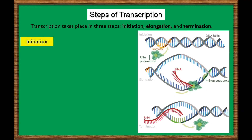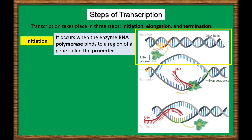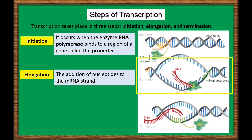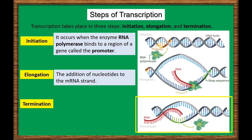Initiation is the beginning of transcription. It occurs when the enzyme RNA polymerase binds to a region of a gene called the promoter. This signals the DNA to unwind so the enzyme can read the bases in one of the DNA strands. The enzyme is ready to make a strand of mRNA with a complementary sequence of bases. After initiation, the next step is elongation — the addition of nucleotides to the mRNA strand. And the last step is termination, which is the ending of transcription. The mRNA strand is complete and it detaches from DNA.